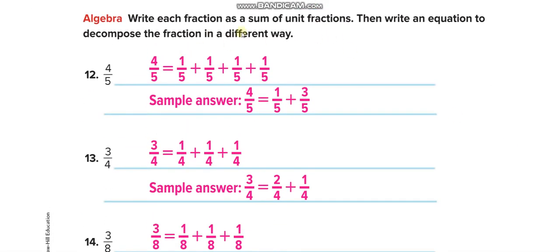Here, they want you to write each fraction as a sum of unit fractions. Unit fractions are any fractions that have 1 in the numerator. So for 4 over 5, we write 4 unit fractions — 1 over 5, four times — because the numerator is 4.